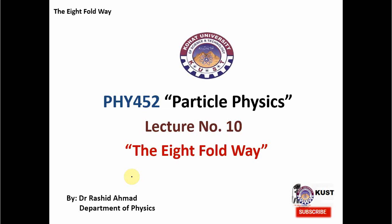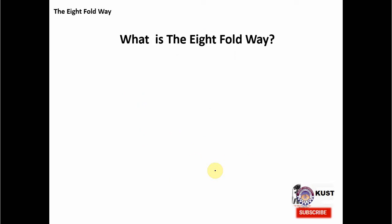Mendeleev of particle physics was Murray Gell-Mann, who in his first ever attempt to classify elementary particles proposed a mechanism of the Eightfold Way. Today we are going to understand how Eightfold Way works with some simple examples. So let's first start with what is the Eightfold Way.